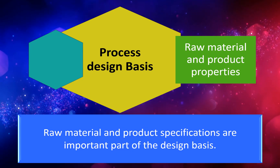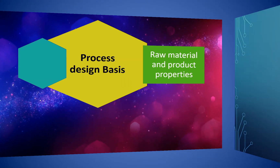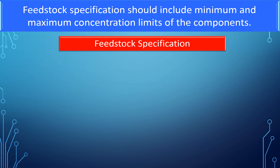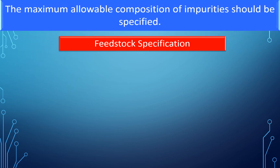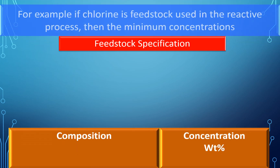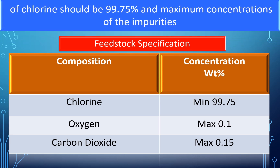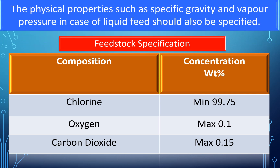Raw material and product properties: Raw material and product specifications are an important part of the design basis. The feedstock specification should include minimum and maximum concentration limits of the components. The minimum concentration of the principal reactant should be specified, and the maximum allowable composition of impurities should be specified. For example, if chlorine is a feedstock, the minimum concentration should be 99.75%, and maximum impurity concentrations should not be more than 0.1% oxygen and 0.15% CO2. Physical properties such as specific gravity and vapor pressure for liquid feeds should also be specified.